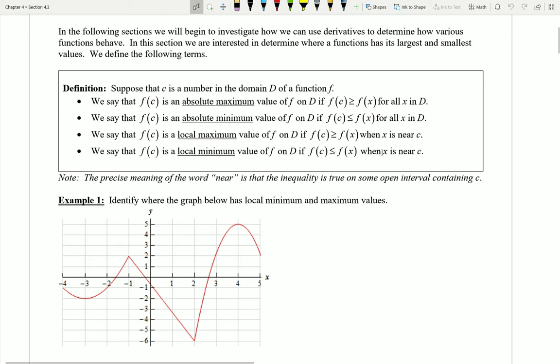Now we can see here that these are kind of some weird terms, weird definitions. They're a little bit loose, kind of somewhat difficult to understand in certain ways. And so let's take a look here at example one to try to get a sense of what exactly we mean by each of these. So let's go ahead and try to identify here where this graph below has local minimum and maximum values.